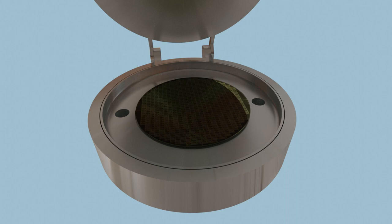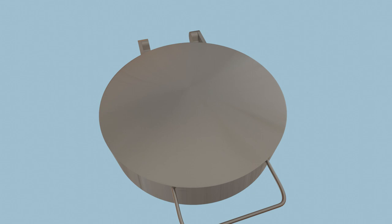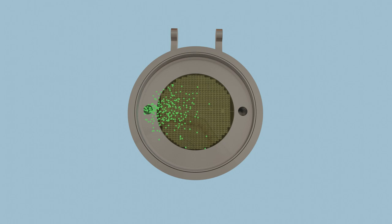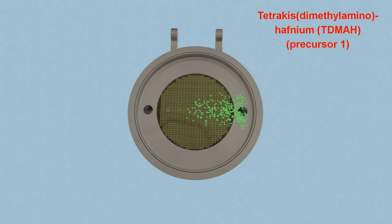This will be the resistive switching layer where the conductive filaments are formed and ruptured. We have used tetrakis dimethylamino hafnium, TDMAH, and water as precursors. Nitrogen was employed as carrier and purge gas.